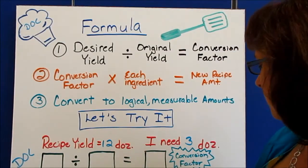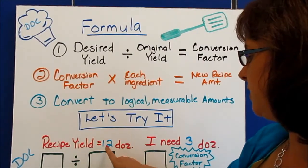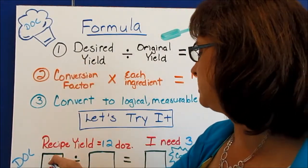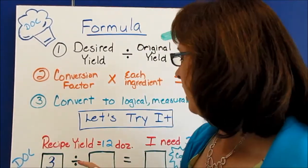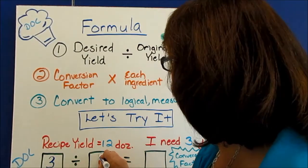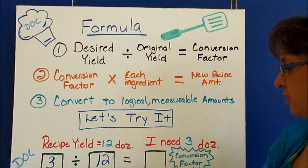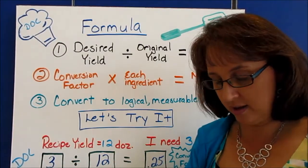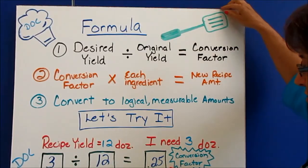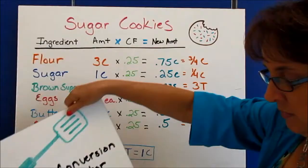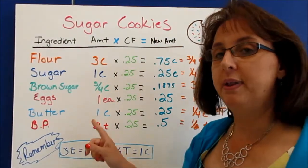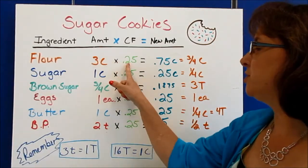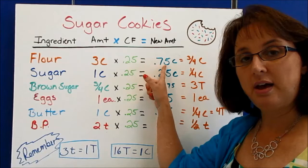Let's try it here. Our recipe yield is 12 dozen, but we only need three dozen. So again, we start with our desired yield — D — which is three. Our original yield is 12. Three divided by 12 gives us 0.25; you can put that in your calculator. So our conversion factor is 0.25. Step two: let's multiply each ingredient by 0.25. We've got three cups times 0.25, which equals 0.75.